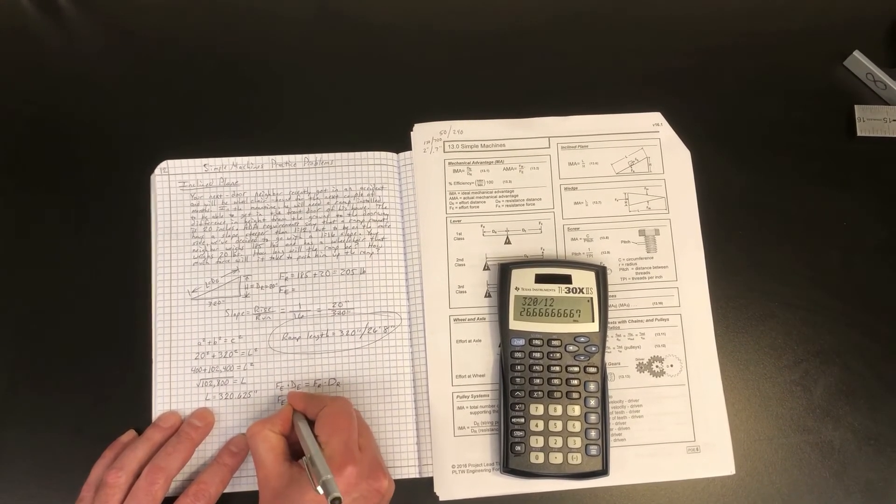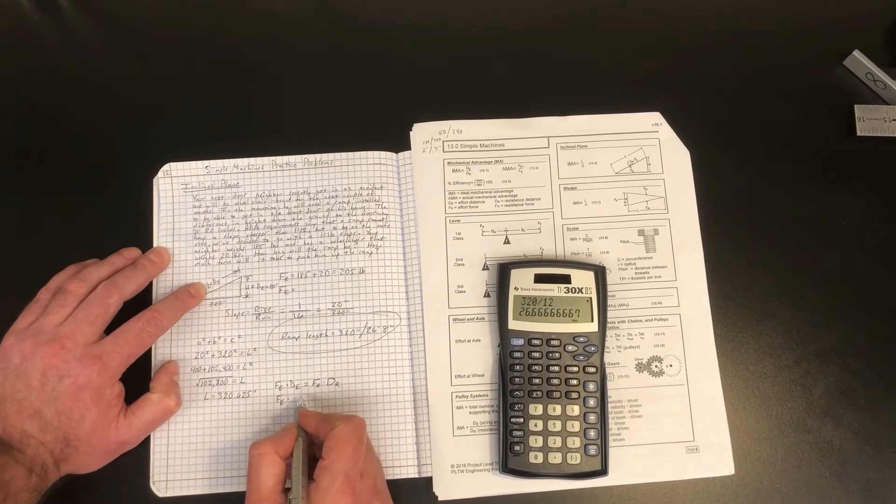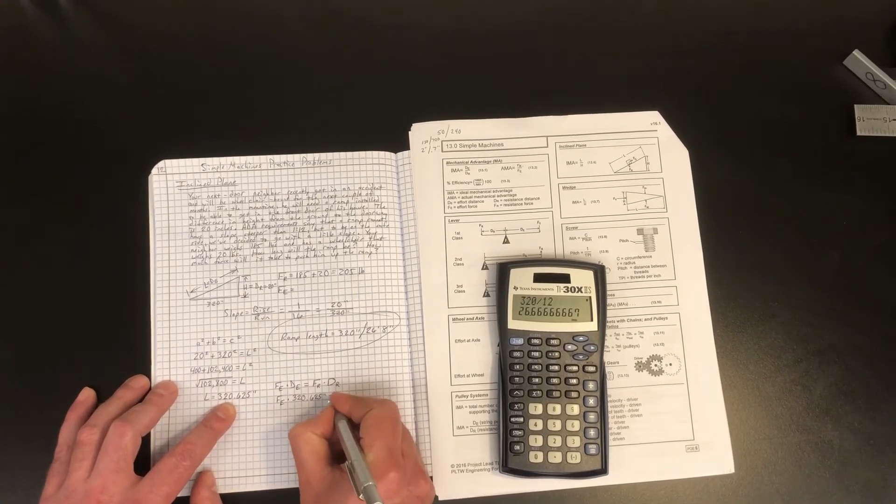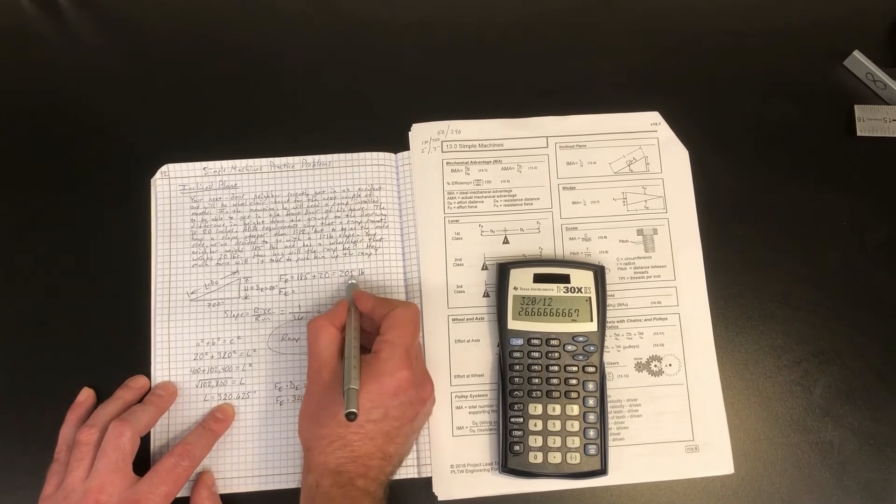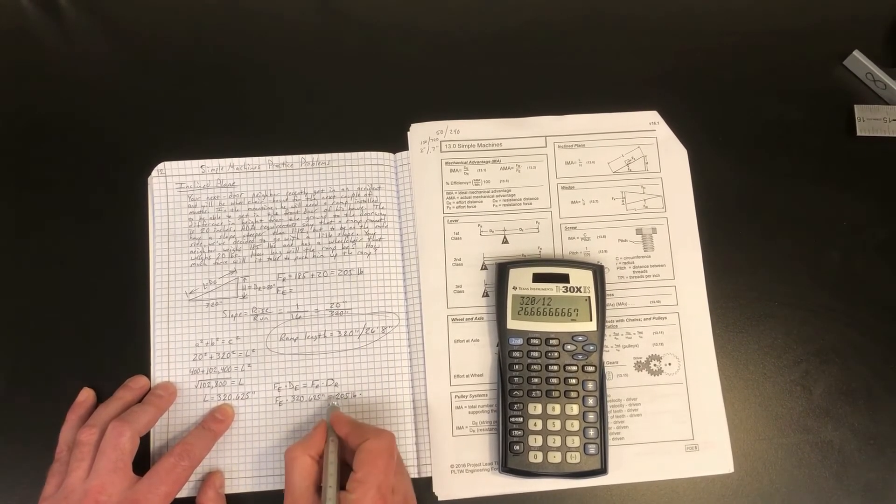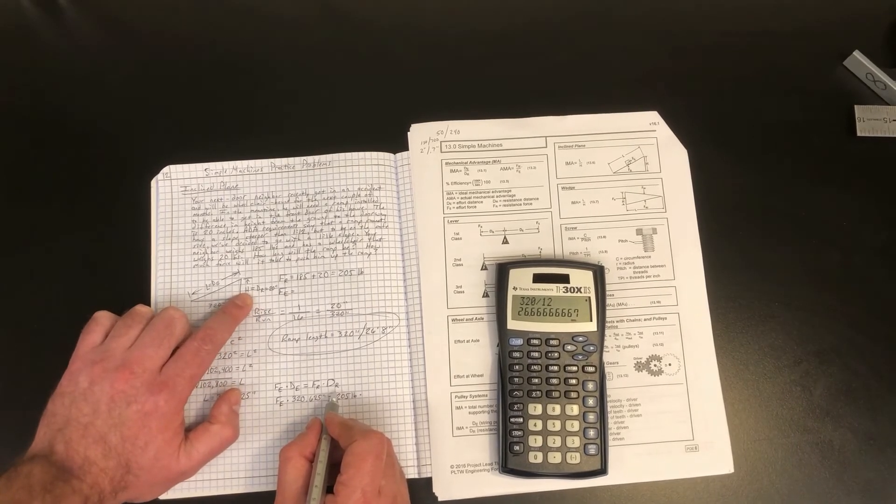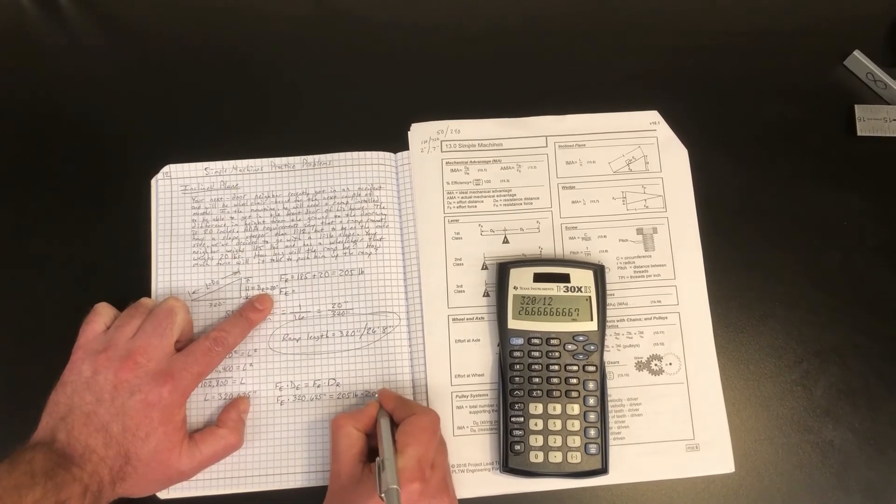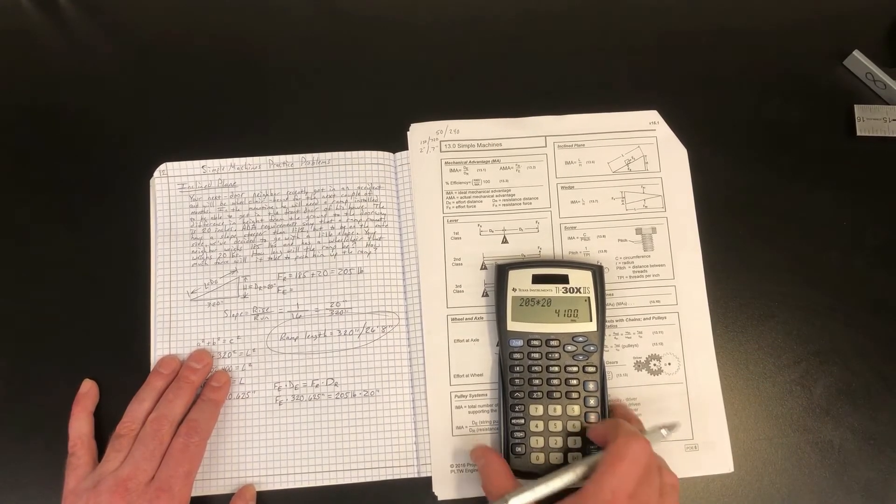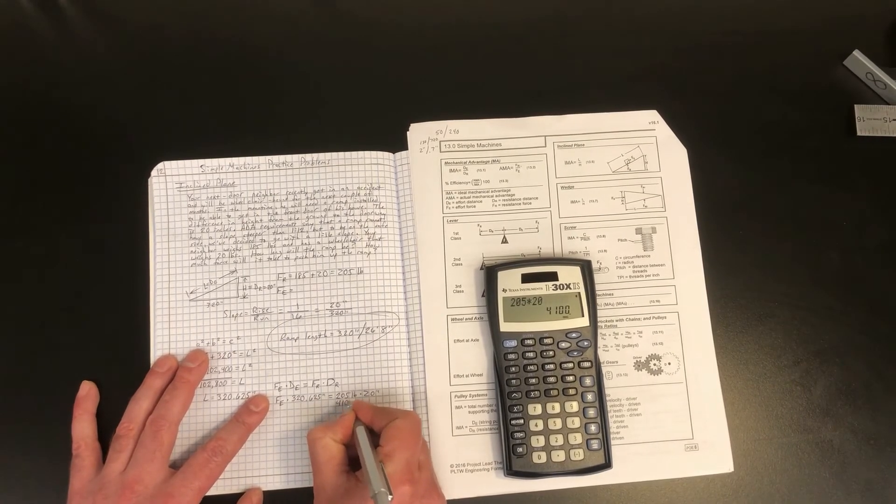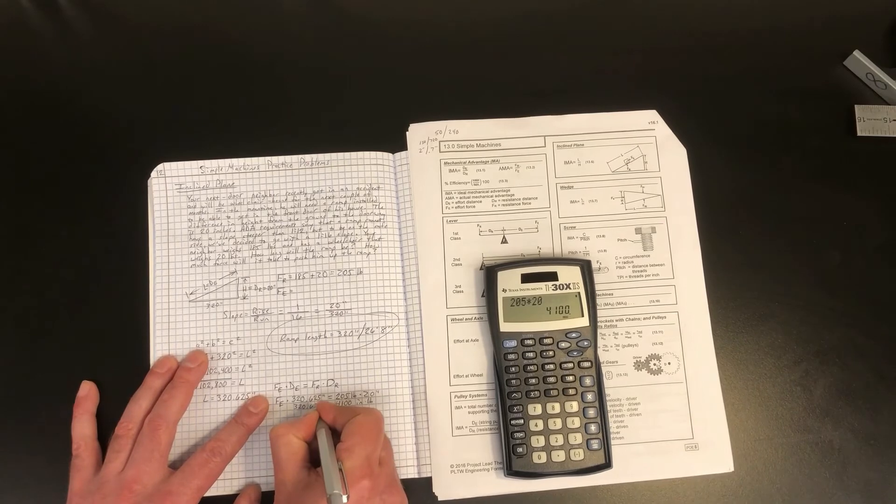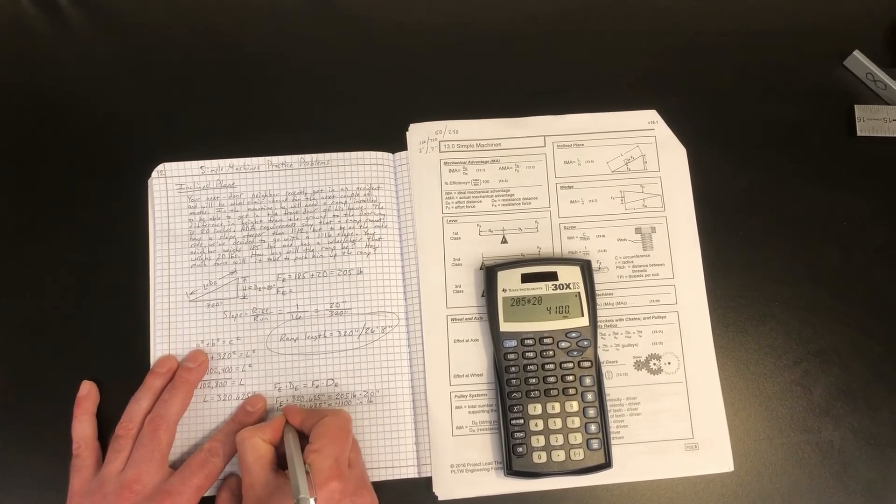So our effort force times DE, which is the length of the hypotenuse, which we have right here, so 320.625 inches. We're going to set that equal to the resistance force, which we have up here, we found is 205 pounds. And we're going to multiply that by the resistance distance, which is equal to H, or 20 inches. So now we can start to simplify this. 205 pounds times 20 inches equals 4,100 inch-pounds. And that is equal to 320 and 5 eighths inches times our effort force, which is still unknown.